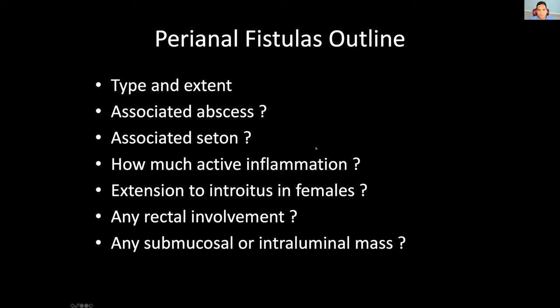Let's talk about the outline of today's video. We're going to discuss how to describe the type and extent of a perianal fistula when dictating these studies. These are the things the surgeon wants to know: the type of the fistula, how long it is, where it's going. Next, they want to know if there's an associated abscess - if there's an inter-sphincteric abscess, that needs to be drained sooner than later. Any abscess in the ischioanal or ischiorectal fossa should also be mentioned.